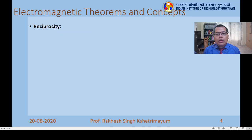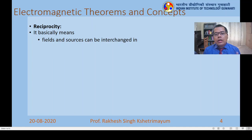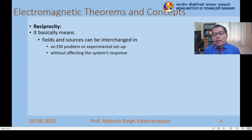We have one more theorem to discuss among the electromagnetic theorems and concepts — this is the last theorem we will consider. This is called reciprocity. What does reciprocity mean? Basically, it means that in electromagnetic field theory, when you interchange the field and the source, the system performance remains the same. When you interchange field and source in an EM problem or experimental setup, the response of the system doesn't get affected.